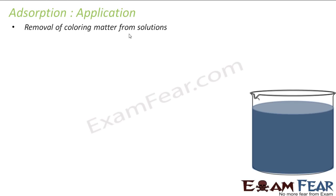Charcoal can easily remove color material — for example, a methylene blue dye. When you put charcoal in the dye solution, it becomes colorless because the charcoal adsorbs all the colored solutes. The same thing is required in industry; for example, raw sugar has a yellow-brown color, and you want to make it white.